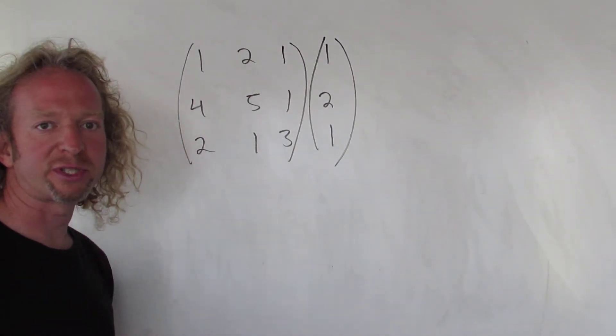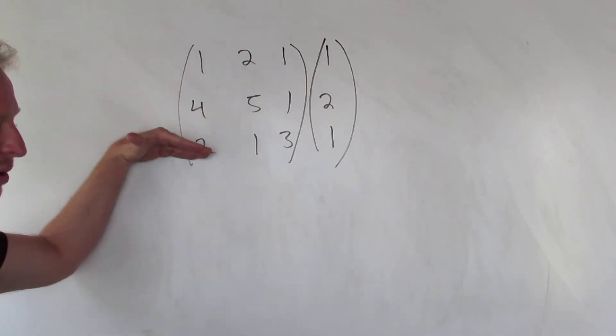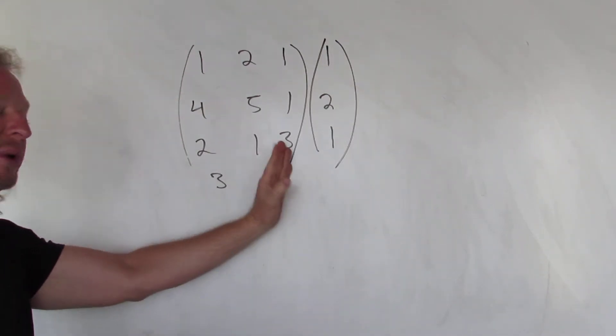Hi everyone, in this video we're going to do a simple example of matrix multiplication. This matrix has 1, 2, 3 rows, and 1, 2, 3 columns.